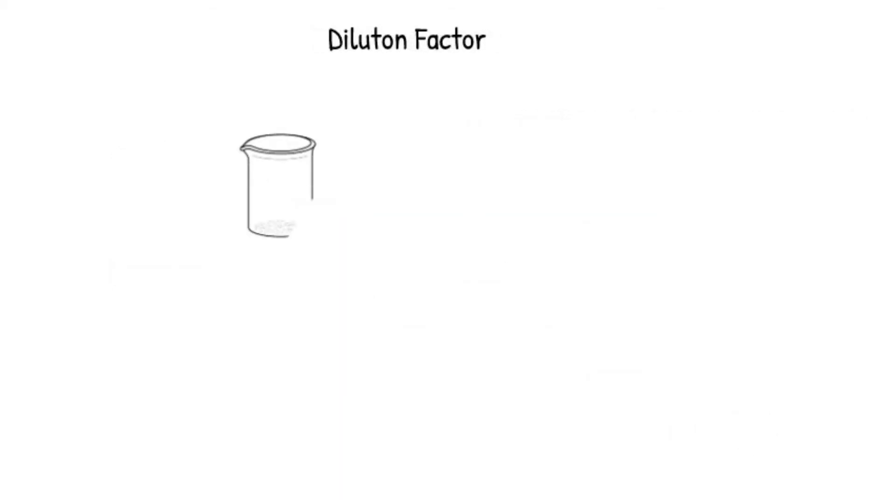This is another example of the dilution factor. Let's re-examine our one-step dilution. Recall, in the example, 5.00 mL of 0.500 mol per liter sodium chloride was diluted to a total solution volume of 250 mL in a volumetric flask.